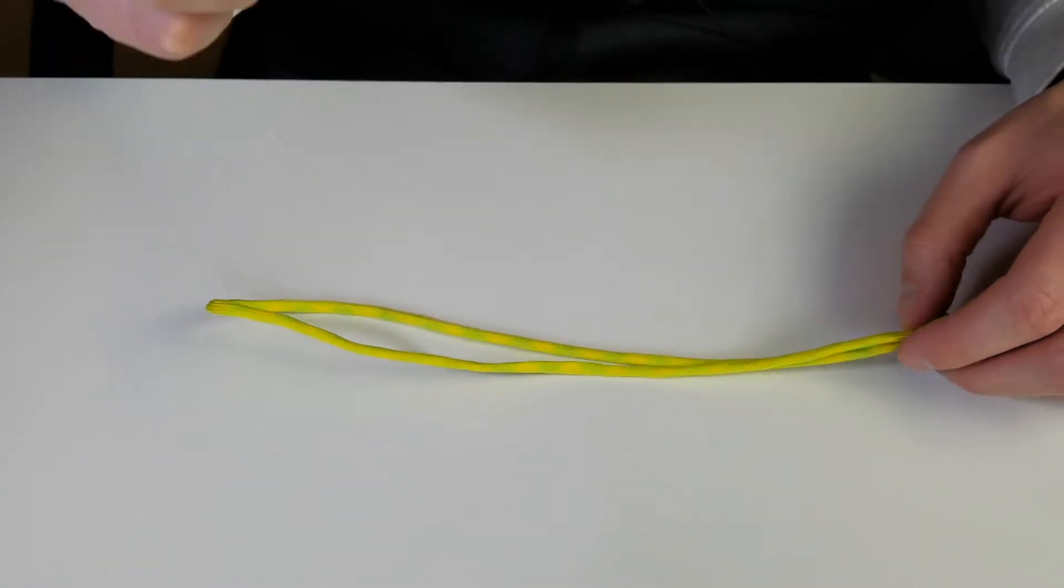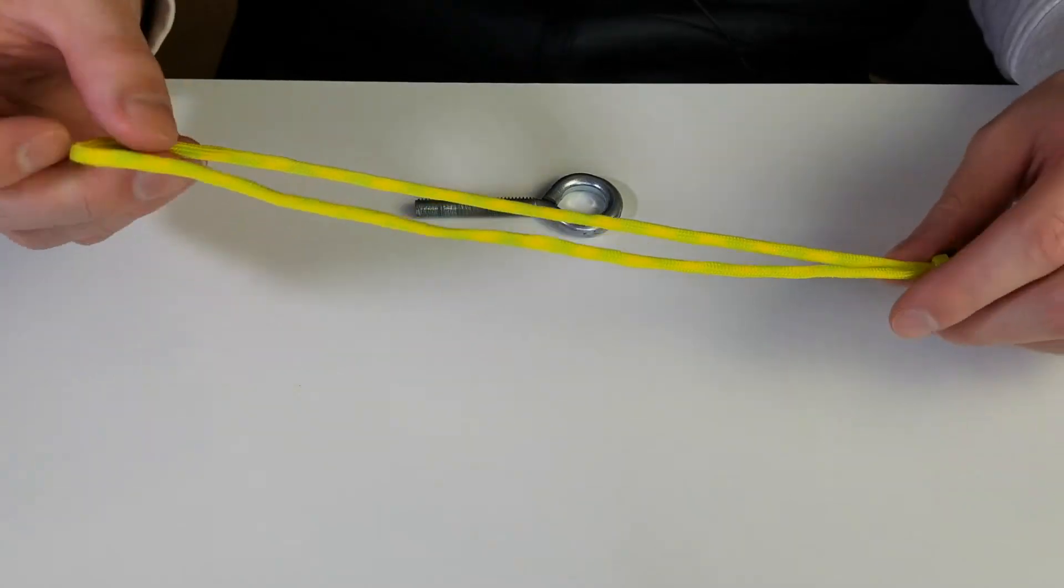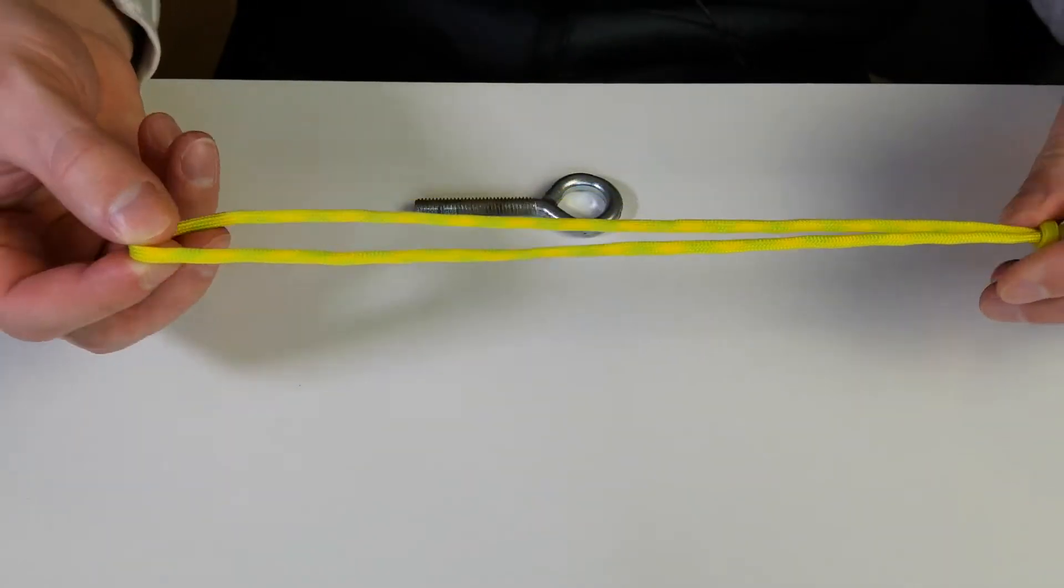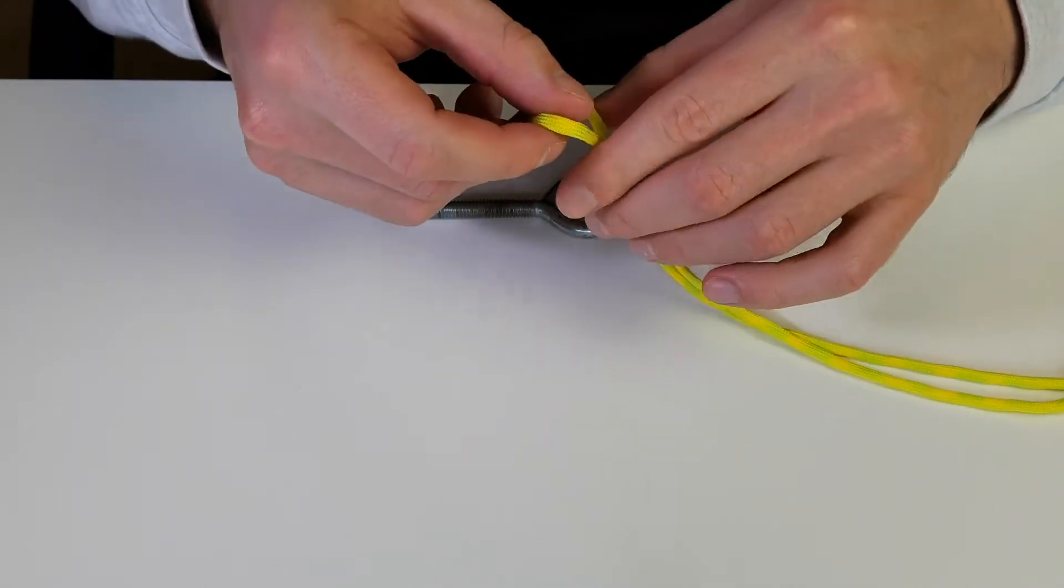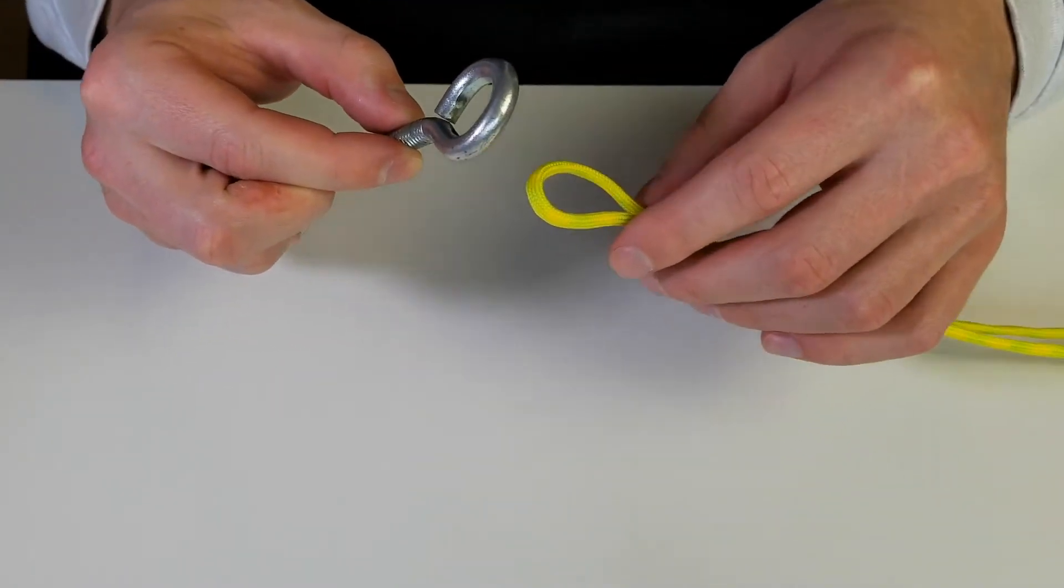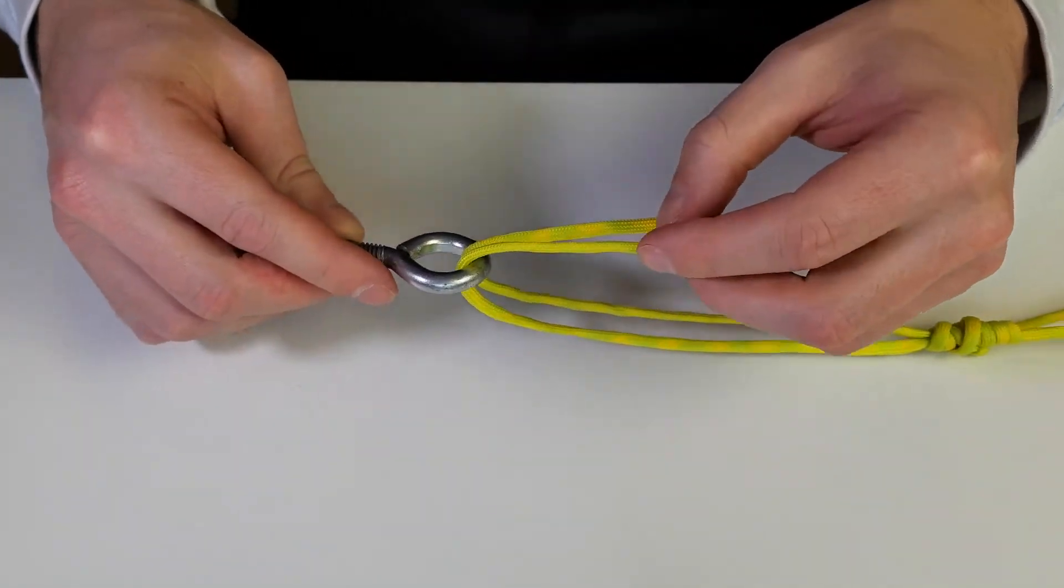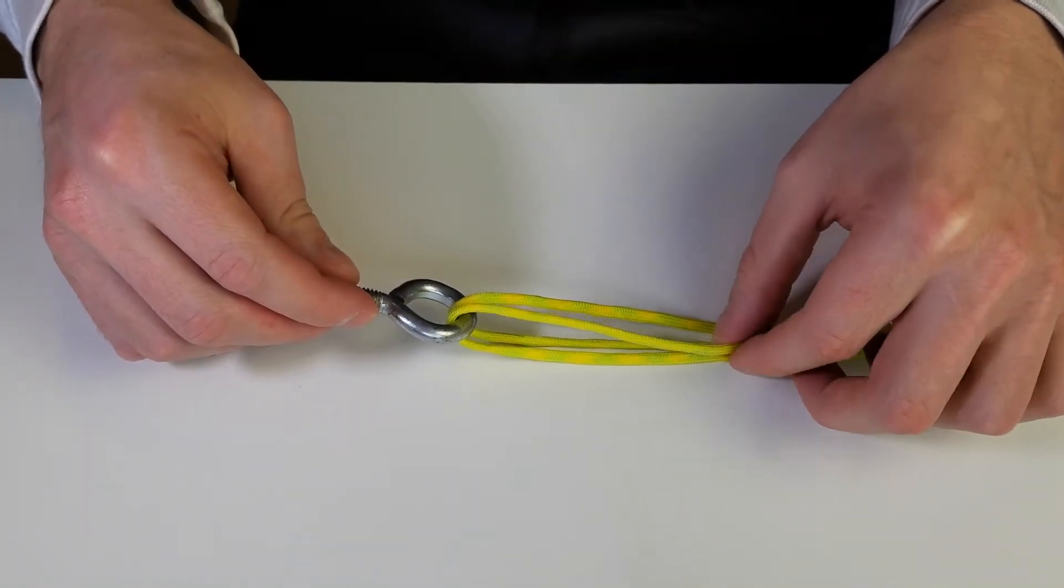You're going to need either your swivel or your hook or whatever you're attaching this line to. Get the loop that's already in your line, and we're going to stick both ends through the swivel, then simply double it back just like that.